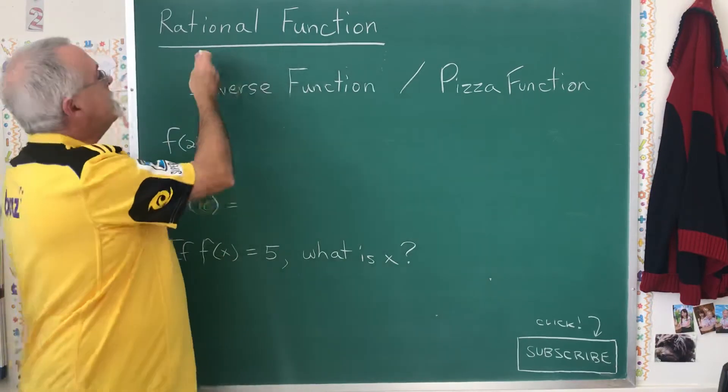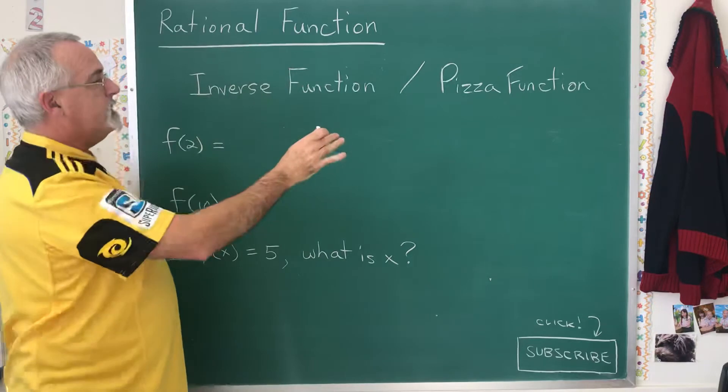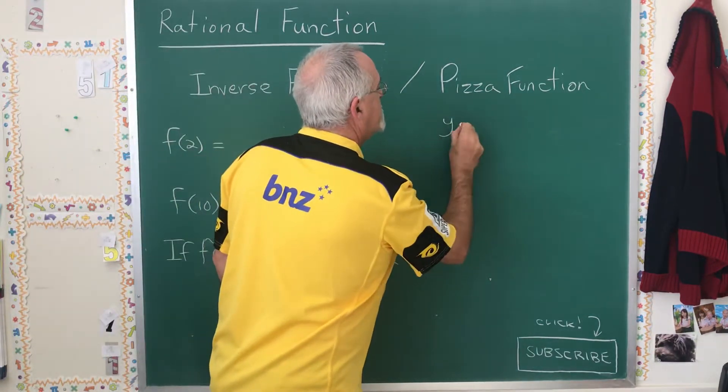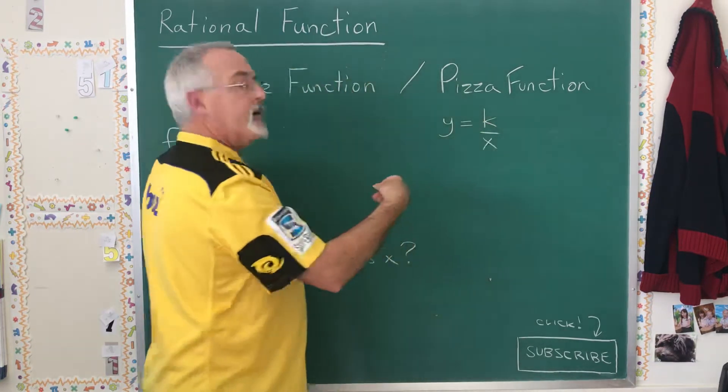And another name for this that they have to be ready for is the rational function. It means the function that has the shape y equals k over x, where k is some number.